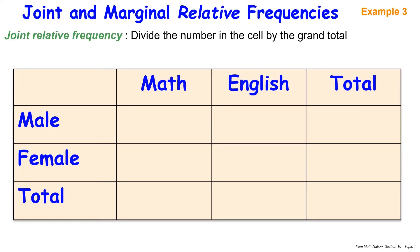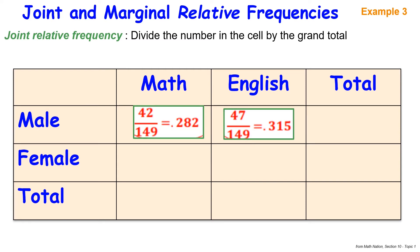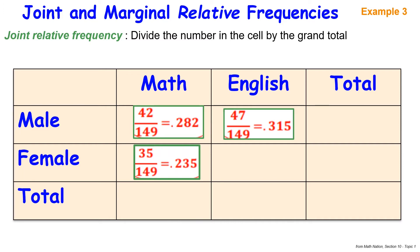Now we're looking at joint and marginal relative frequencies. Joint relative frequency is found by dividing the number in each cell by the grand total of 149. So 42 males who like math divided by 149 gives 0.282. Next, 47 males who like English divided by 149 gives 0.315. For females: 35 divided by 149 gives 0.235, and 25 divided by 149 for females who like English gives 0.168. Joint relative frequency appears on the inside of the table.